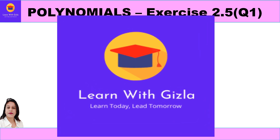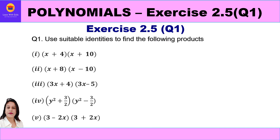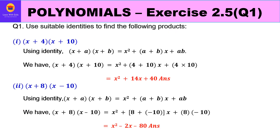Hello dear students, welcome to YouTube channel Learn with Gizla. In this video on polynomials, we shall be taking Question 1 of NCERT Exercise 2.5. The first question says: use suitable identities to find the following products. Here the factors are given and we have to multiply them to get the product. All are binomial into binomial, so we will use the identities we have learned.